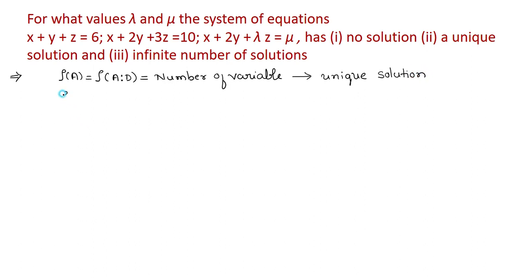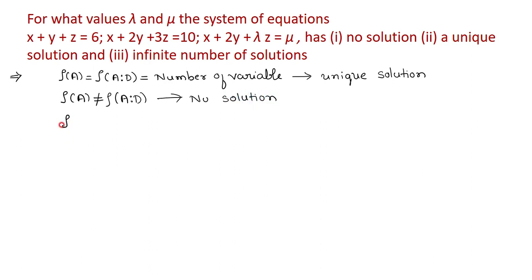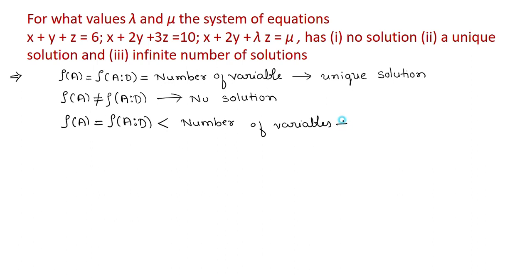If the rank of the matrix is not equal to the rank of the augmented matrix, then the system of equations has no solution. Suppose the rank of matrix A is equal to the rank of the augmented matrix, but if it is less than the number of variables, then it will have an infinite number of solutions.